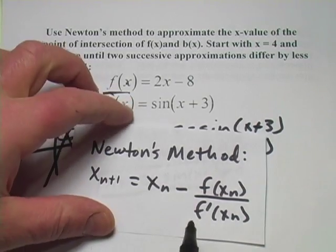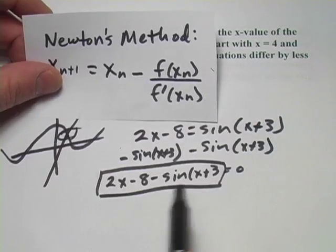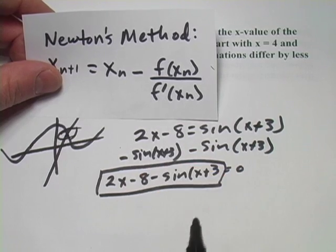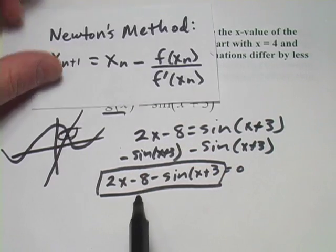So let's see if we can give this a try. We're going to need the function. We've got that. We're also going to need the derivative of the function. So we need to take the derivative of this.